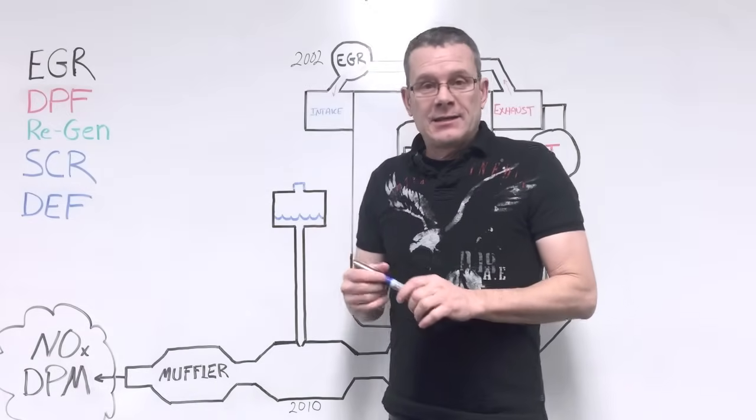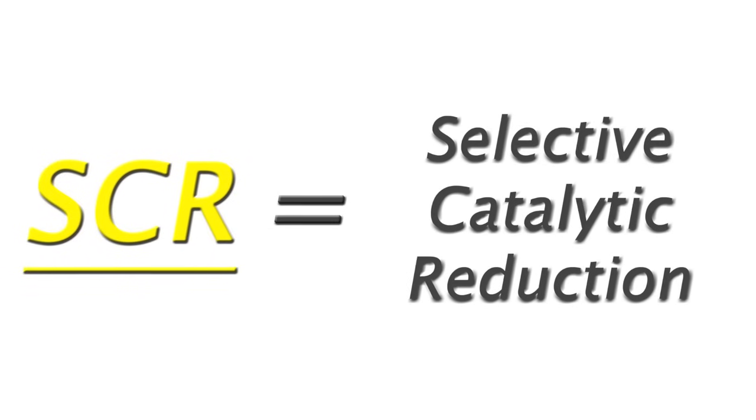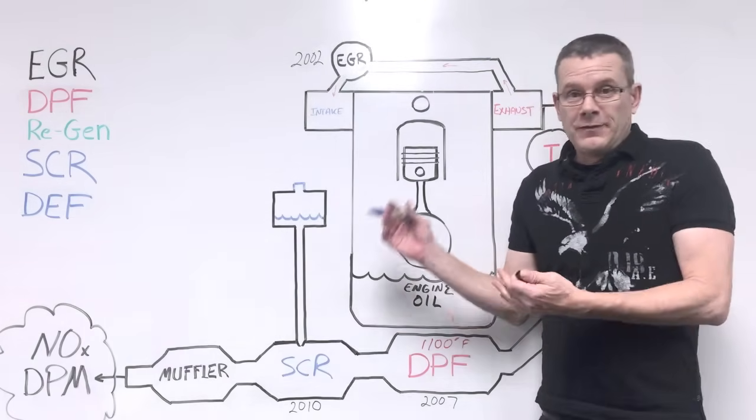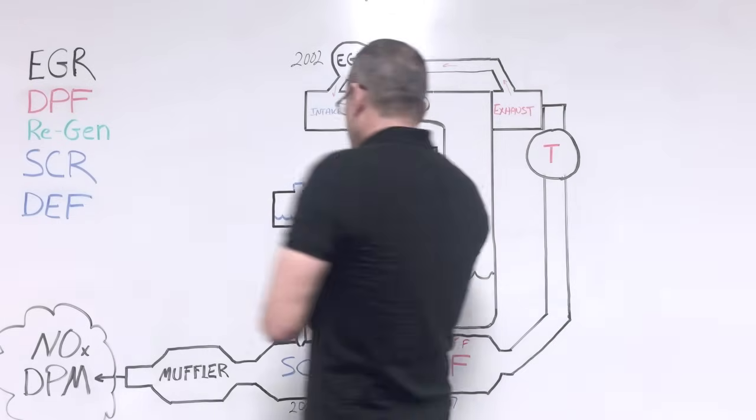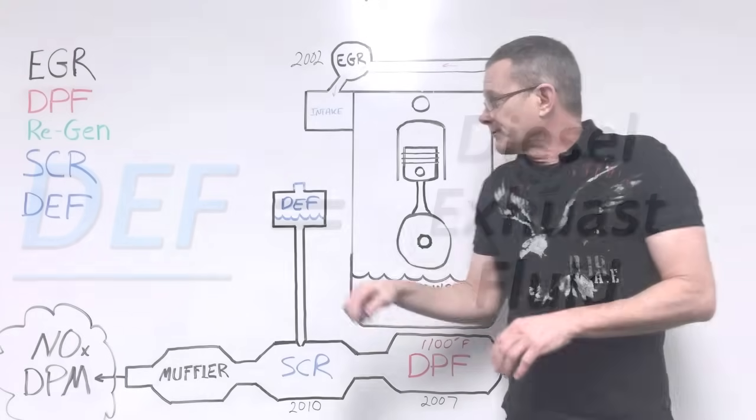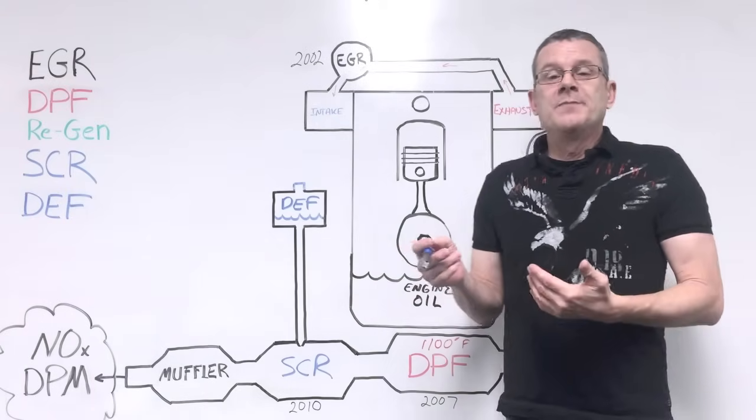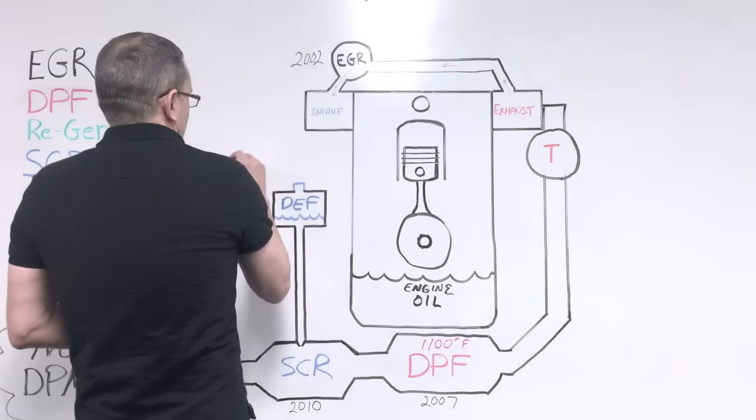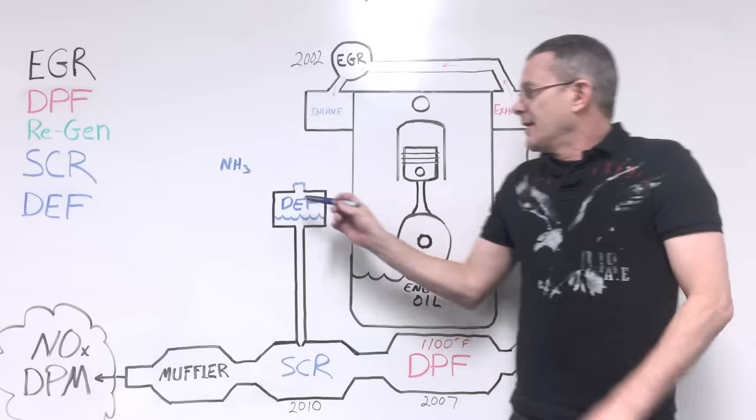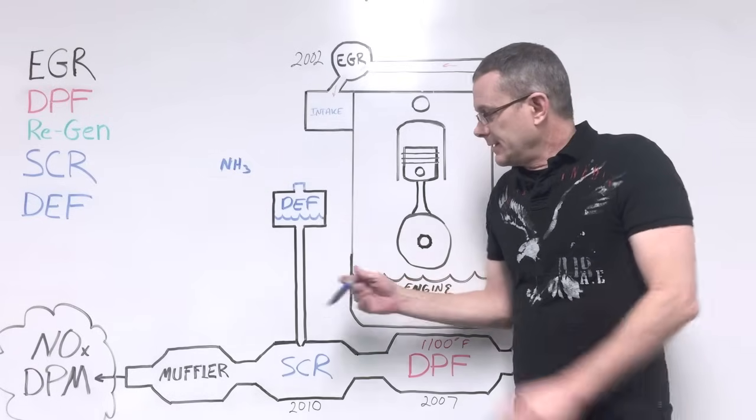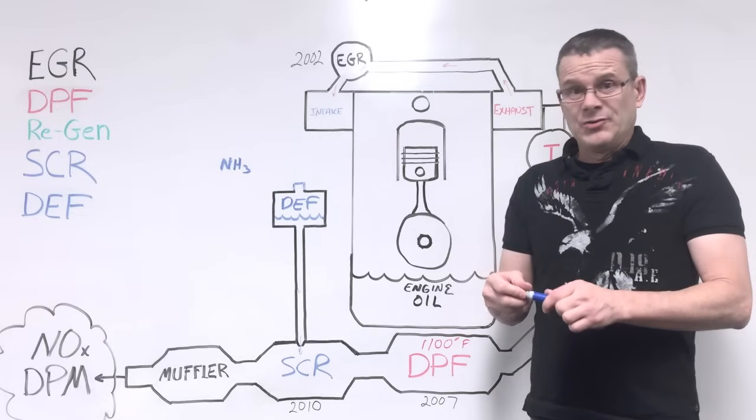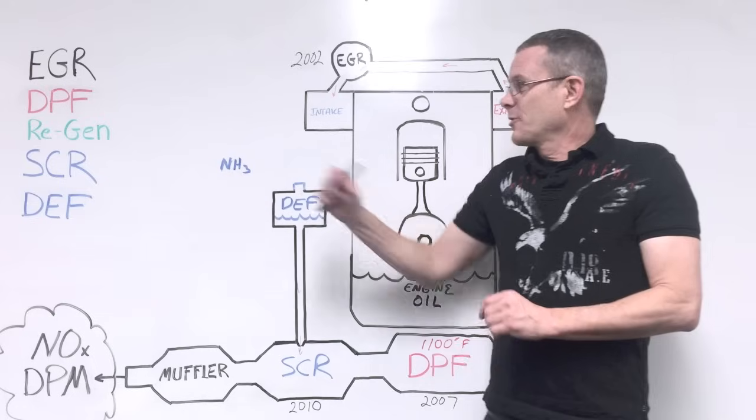Here's what they came up with. It's called the SCR, Selective Catalytic Reduction. That is another muffler-shaped device that's put into the exhaust system, and it works in conjunction with DEF, which is diesel exhaust fluid. DEF, diesel exhaust fluid, is basically ammonia, chemically expressed as NH3. This is computer controlled, and what it does is it sends that DEF down a line and injects it into the SCR.